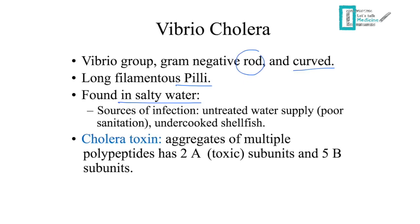Watery diarrhea is caused by toxins — this is important. Cholera has a toxin called cholera toxin, which is an AB toxin. It has two subunits of A and five subunits of B, as shown in the figure.